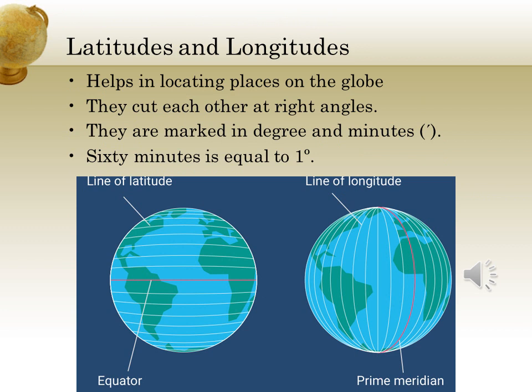As we have seen, the equator is an imaginary line, and there are many other lines which are vertical and horizontal that go around the globe. These lines are called latitudes and longitudes. These lines help in locating places on the globe. The latitudes and longitudes cut each other at right angles and are marked in degrees and minutes. 60 minutes equals 1 degree.